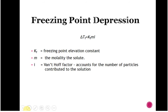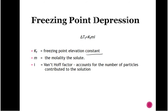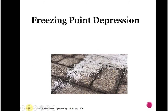Freezing point depression works exactly the same way. Because of the interactions in the liquid phase, the solution doesn't want to change to a solid — it wants to stay as a liquid. The formula is ΔT = Kf × m × i. The KF values are often given as negative numbers since the freezing point goes down.